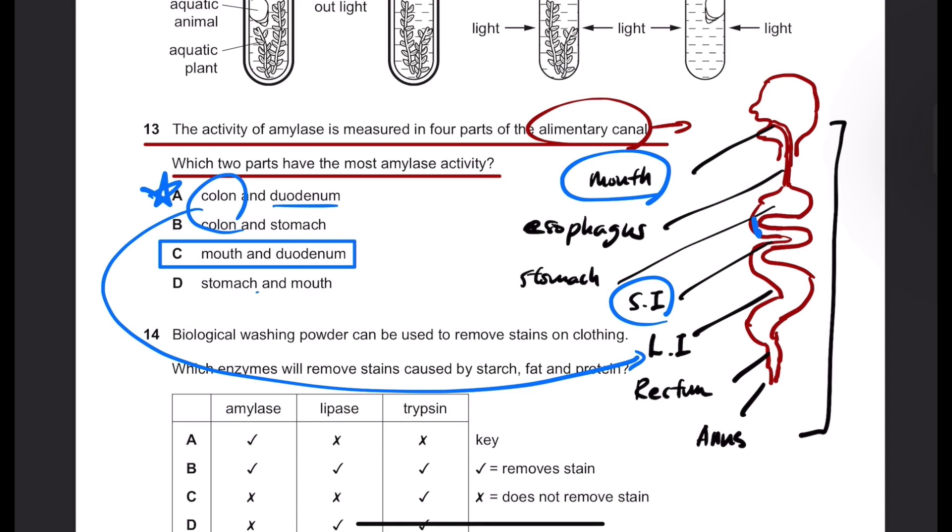So stomach does not contain amylase. It contains pepsin, which is protease. That's the enzyme that breaks down the proteins. Amylase is an enzyme that breaks down the starch into maltose, or sometimes you can just say glucose. But strictly speaking, amylase enzyme breaks down starch into maltose, and then maltase breaks down the maltose into glucoses.